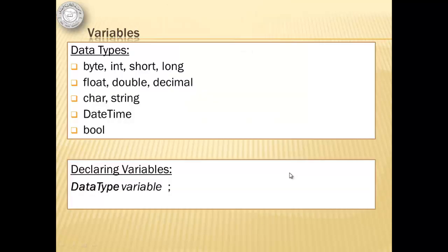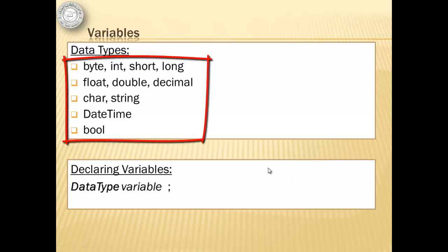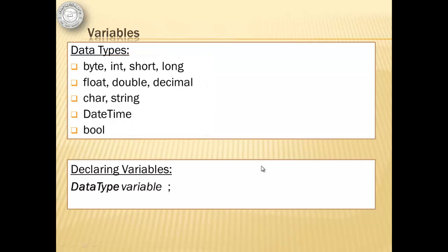Some of the most often used data types in C Sharp are byte, int, short, long, float, double, decimal, char, string, datetime, and bool.